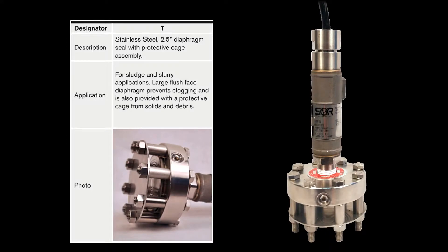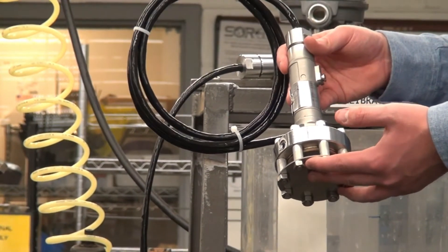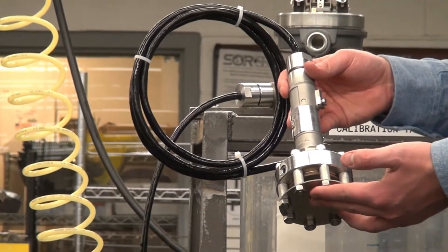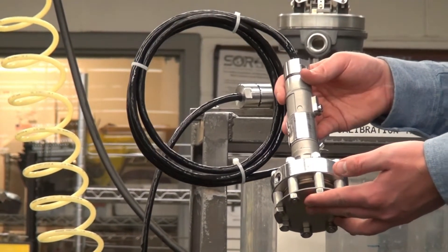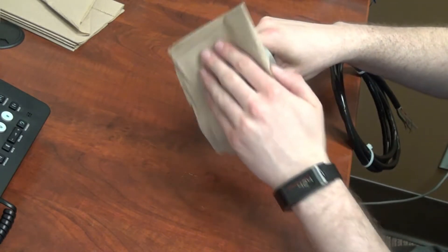The third option we have is a cage diaphragm seal option. The cage diaphragm seal option incorporates a two and a half inch flush face diaphragm seal. This is good for applications that contain sludges or slurries that can potentially build up on the inside of the process connection. This way you can easily clean the face of the surface without any issues.